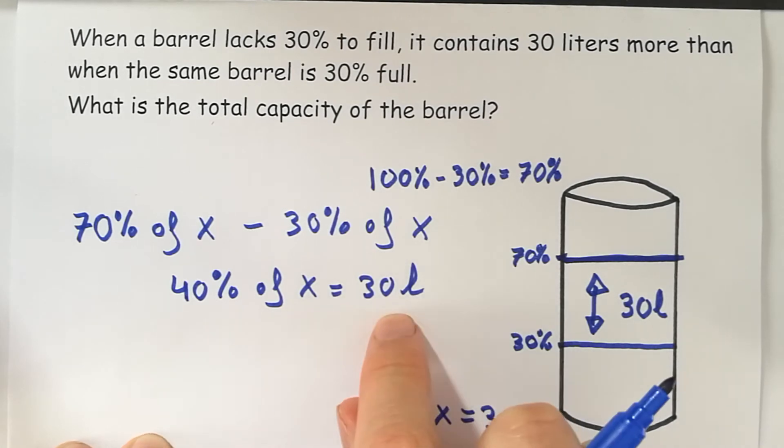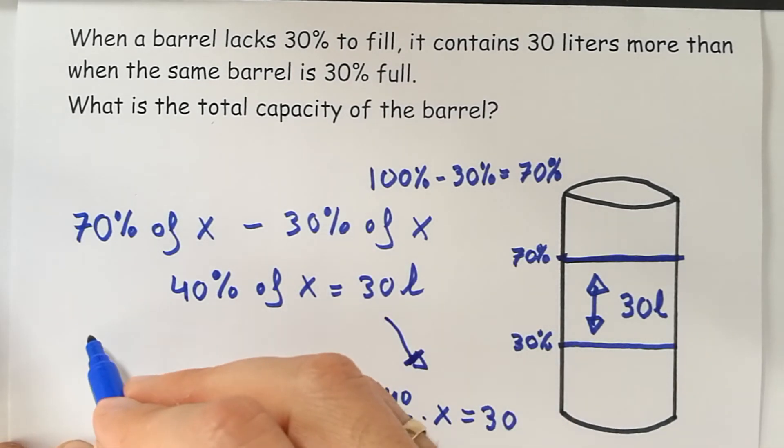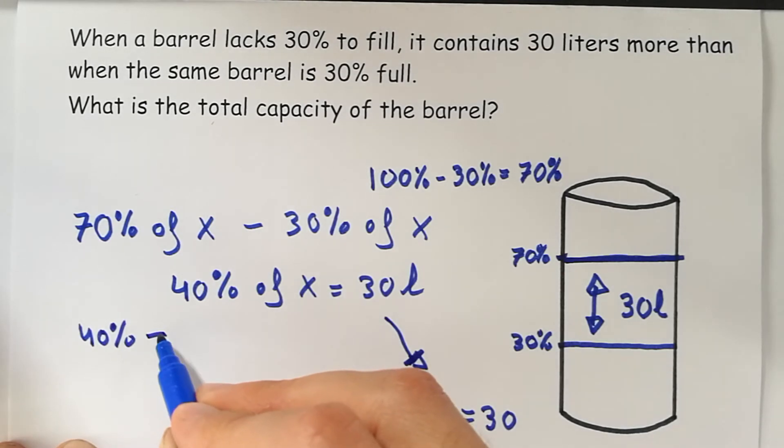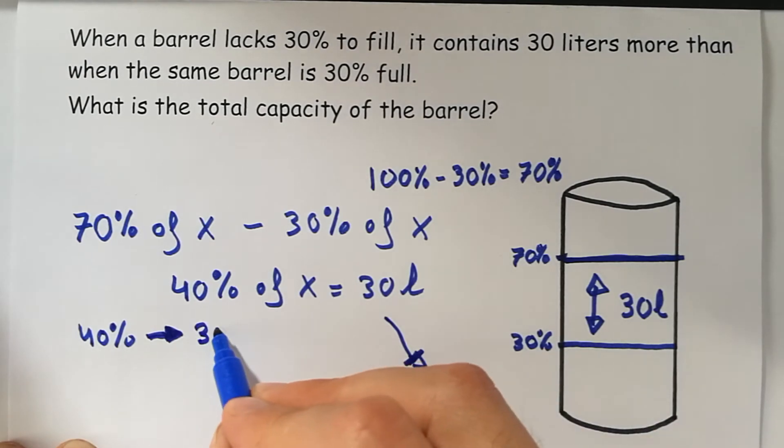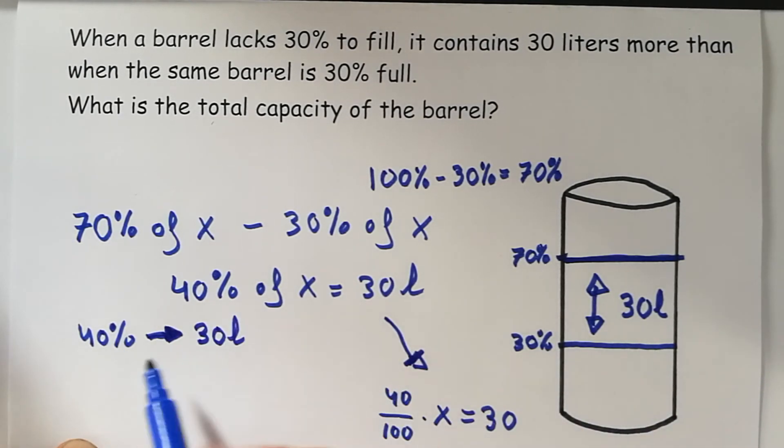And if we don't use equations, we say something like 40% is the same as 30 liters. But be careful, if you write this, you cannot use an equal sign.